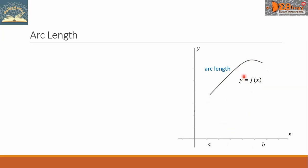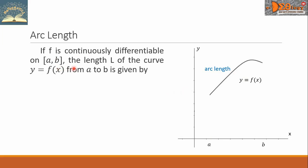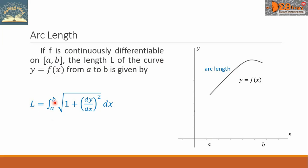So the arc length can be computed. Let us have a formal definition. If f is continuously differentiable on the closed interval from a to b, the length L of the curve y equals f of x from a to b is given by this formula: L equals the definite integral from a to b of the square root of the quantity 1 plus (dy/dx) squared, then dx.